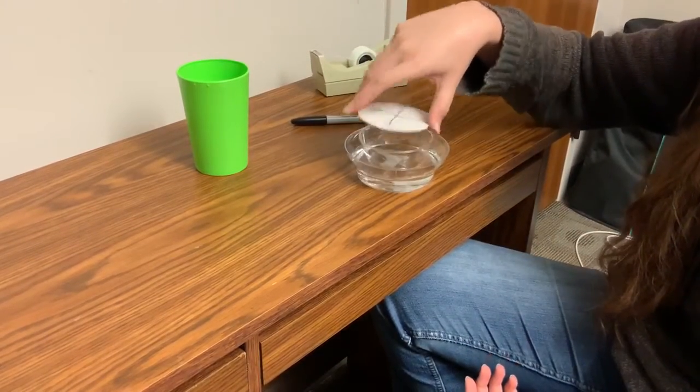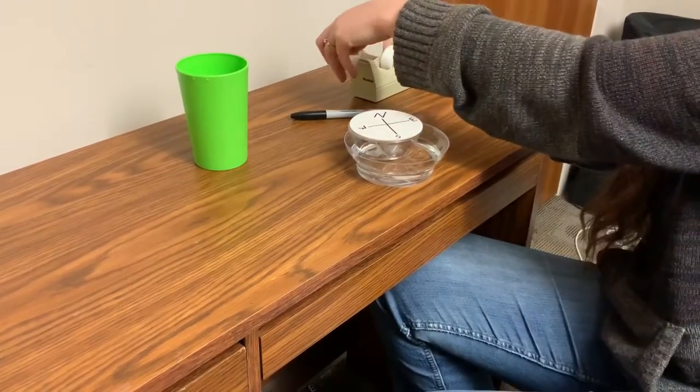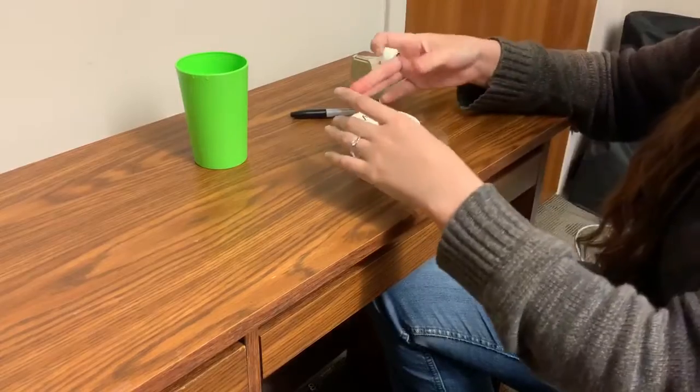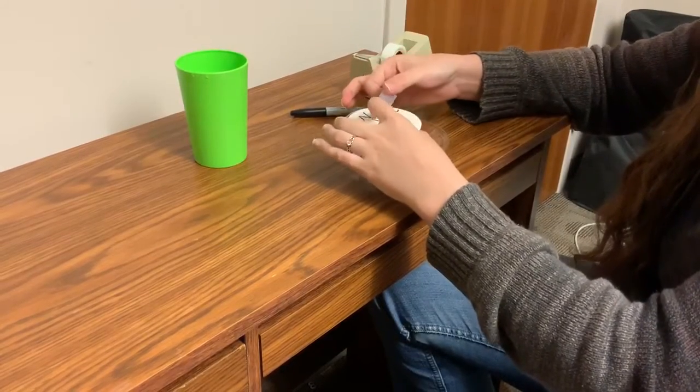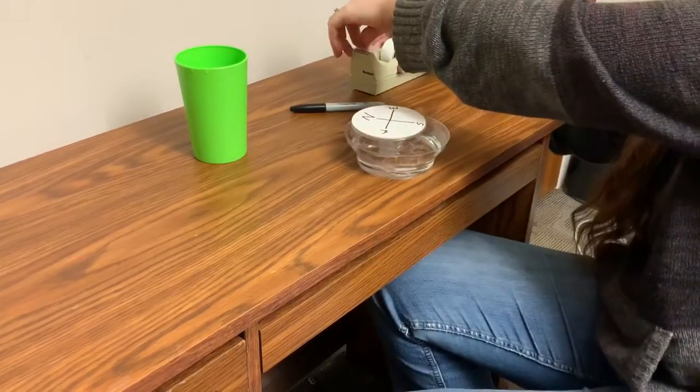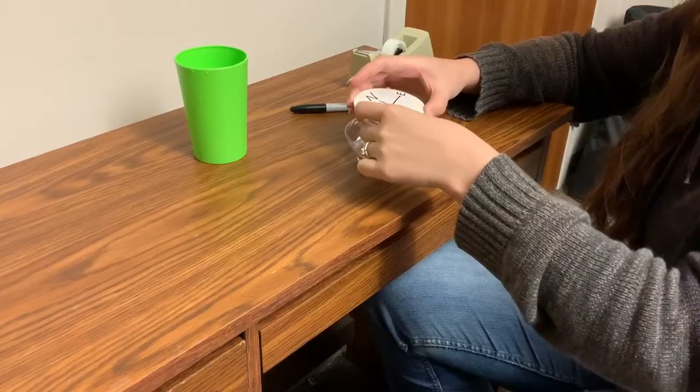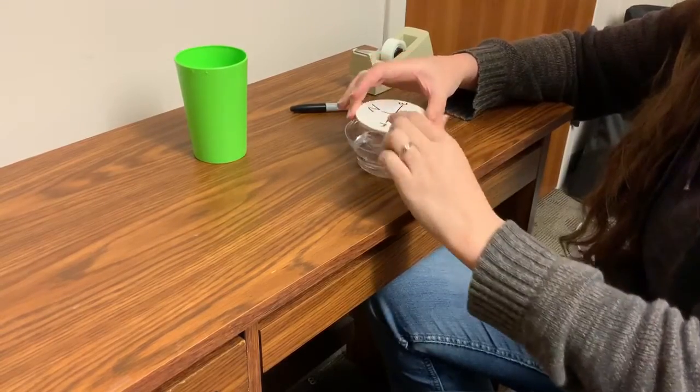And then you can figure out which way you need to label your compass. And once you do, you just tape down the cardboard and then you've got yourself a compass.